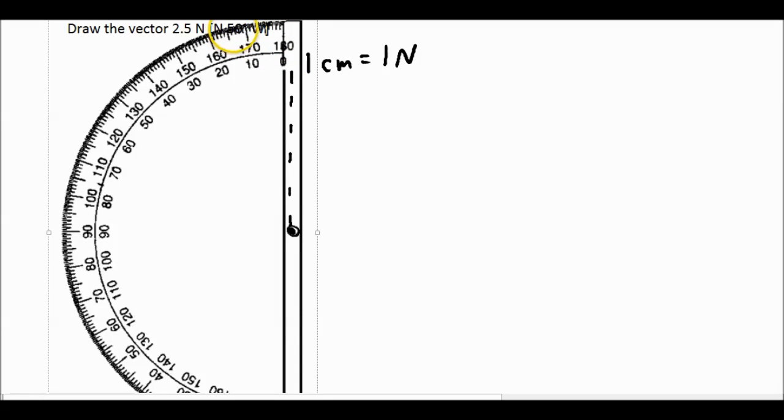We can't see it anymore, but it's 50 degrees to the west. So we start with 0, 10, 20, 30, 40. Here is 50. So I'll make a little mark right there, right at 50 degrees.